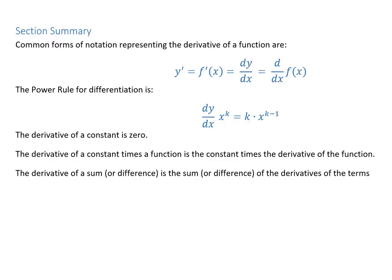To summarize what we learned in this section: we learned about different types of notation — writing y prime or f prime, and writing dy/dx or d/dx of f(x). We learned several differentiation rules: the power rule, that the derivative of a constant is 0, the constant multiple rule, and the sum and difference rule for multi-term expressions. Get practice and get familiar with these rules so you can handle radicals or fractions by writing them as powers and applying what we learned today.